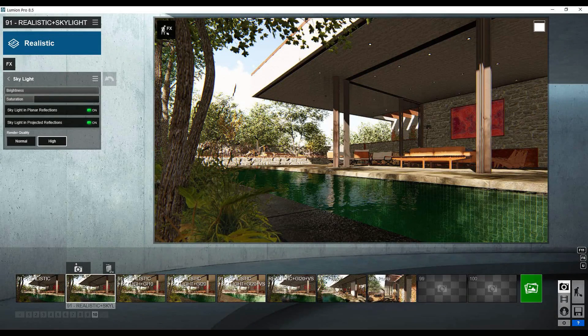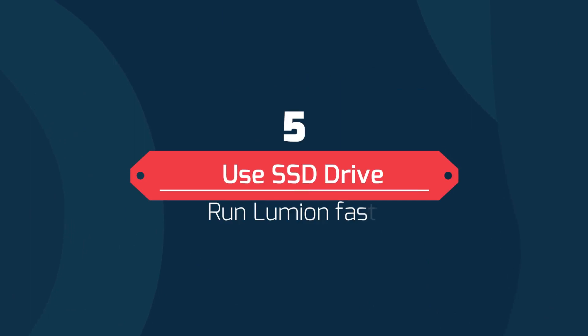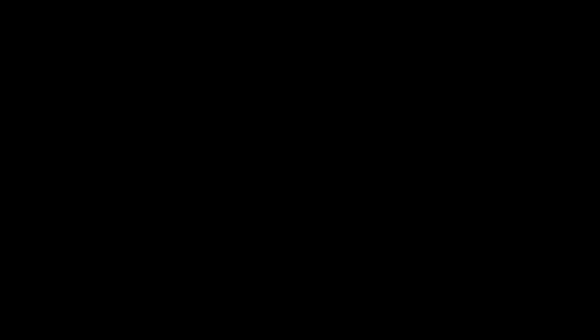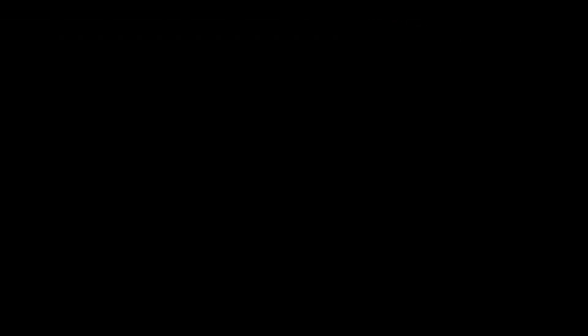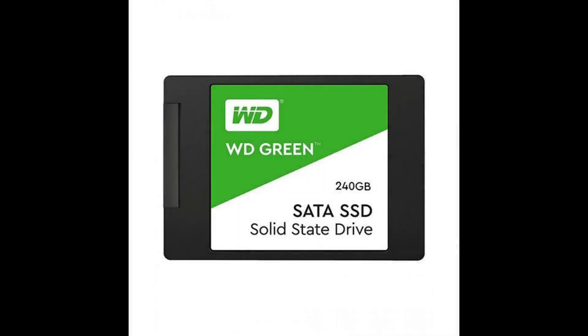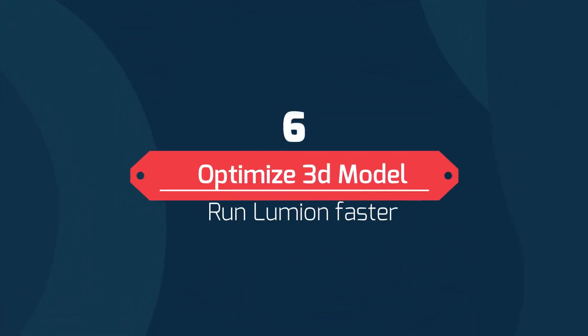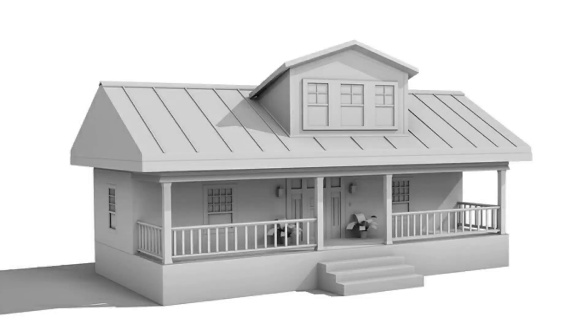Number five: install Lumion on an SSD drive. If your computer has an SSD drive, install Lumion on it and place the 3D model files of your project on this drive as well. By doing this, Lumion works faster because of the SSD drive's speed.